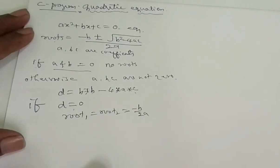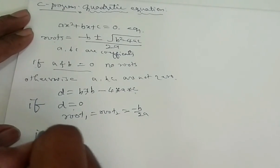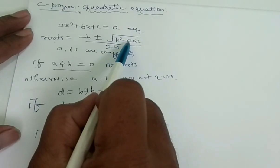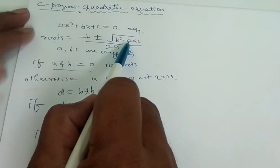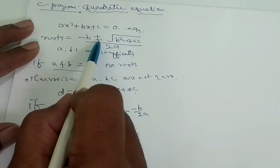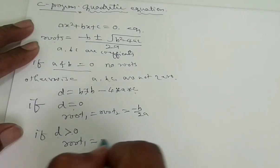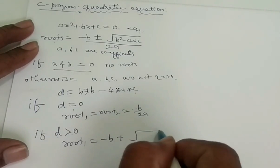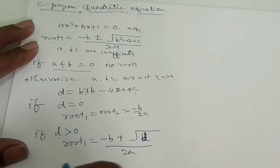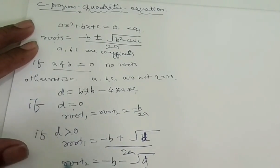If D is greater than 0, this term becomes a positive value. We will find two roots: one for plus and one for minus. Root 1 equals minus B plus square root of D divided by 2A, and root 2 equals minus B minus square root of D divided by 2A.